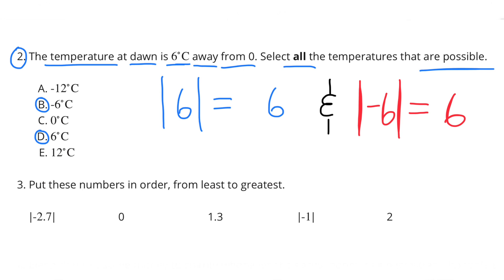On the number line, negative 6 is 6 units away from 0 to the left, so B is possible. C, 0 degrees — nope, 0 degrees is not 6 degrees away from 0, so that's not possible. D, 6 degrees Celsius — that is possible, because 6 degrees is 6 degrees away from 0. And E, 12 degrees Celsius — nope, 12 degrees Celsius is 12 degrees away from 0, so that wouldn't be possible. The absolute value of 6 is 6 units away from 0, and the absolute value of negative 6 is 6 units away from 0. So B and D are possible.